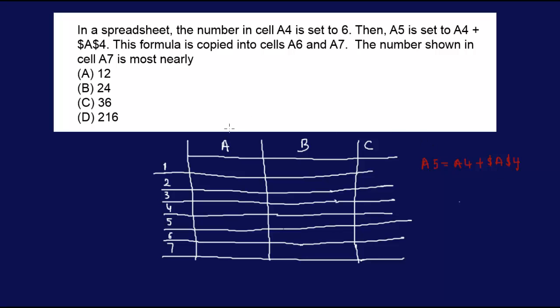So now A4 is 6. And A5 is equal to what? 6, which is A4, plus A4 but with a dollar sign. So A4 remains unchanged.